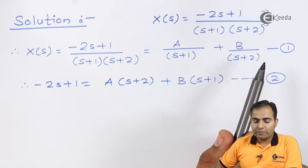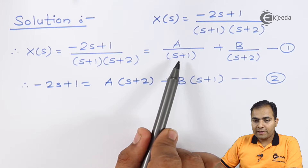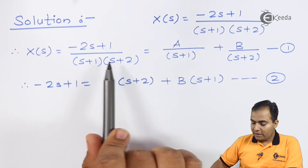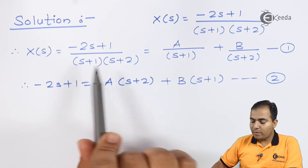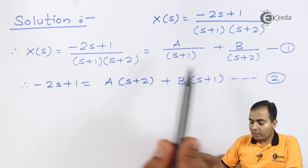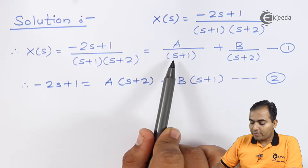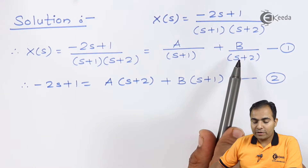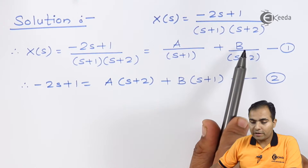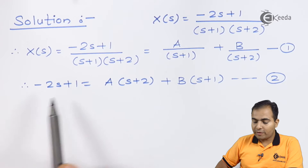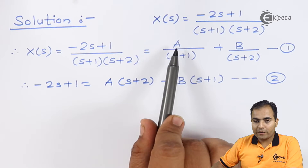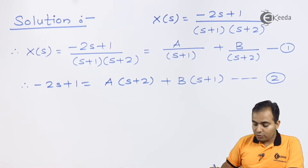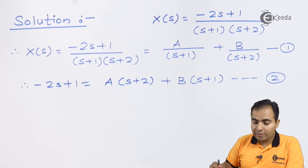According to the two factors, I write A and B and do the cross multiplication. (s+1)(s+1) cancels so A is multiplied by (s+2), and (s+2)(s+2) cancels so B is multiplied by (s+1). To find A and B, substitute s = -1 to get A, and replace s = -2 to get B.